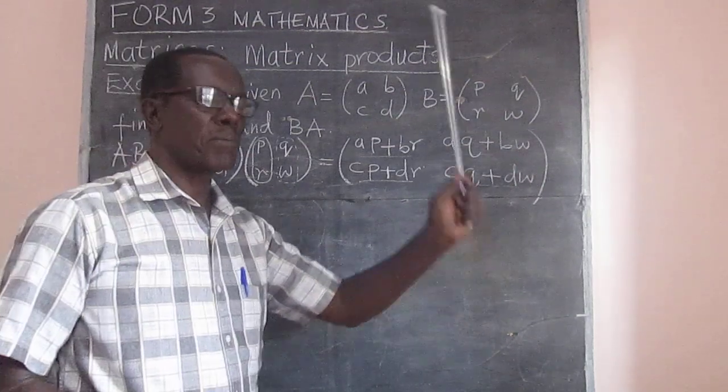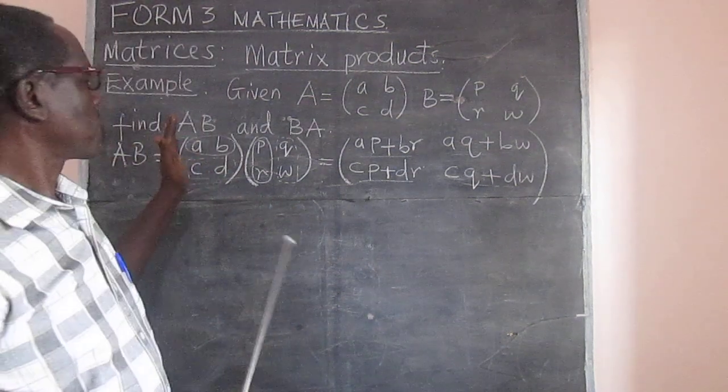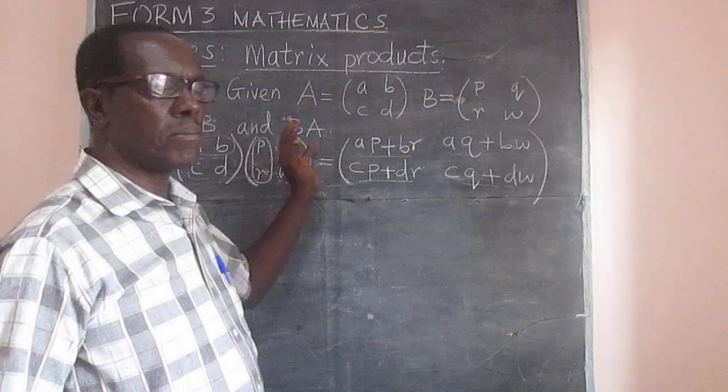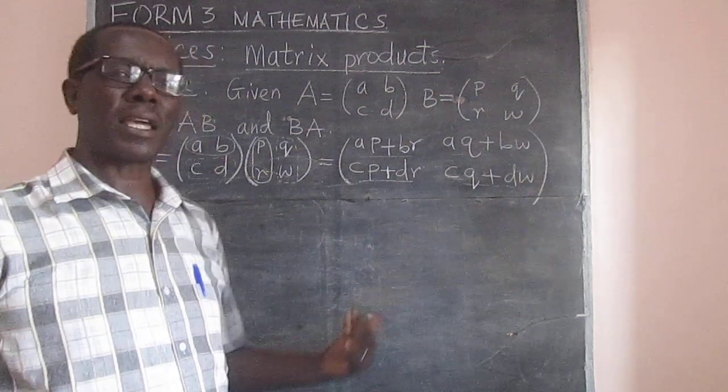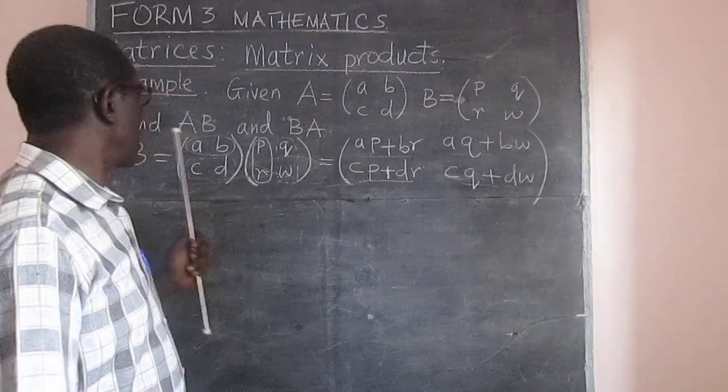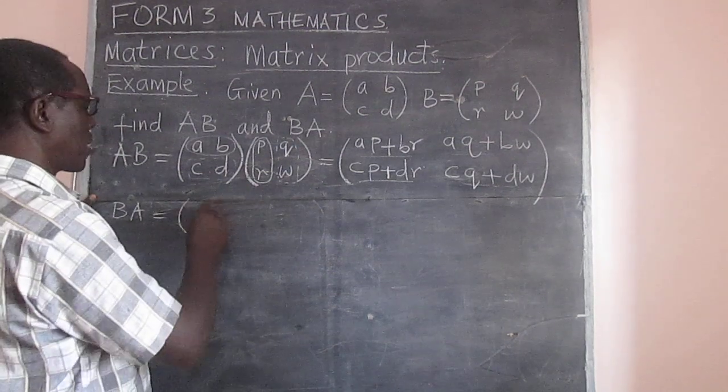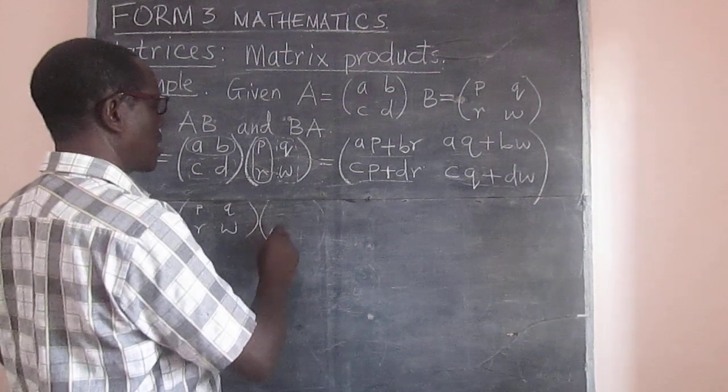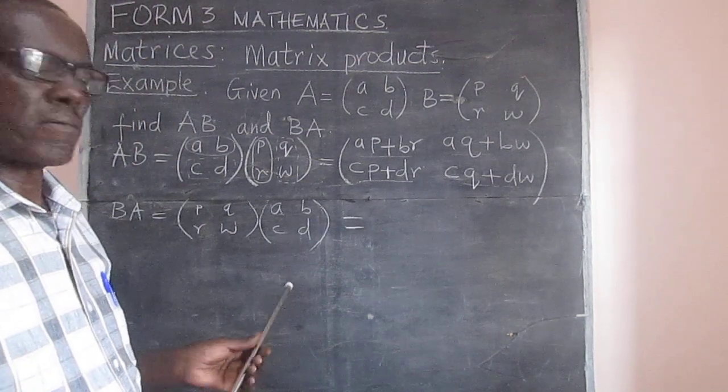And that becomes our product. We said we would like to see whether when we multiply matrices, that's A times B, whether we get the same product when we multiply B times A. When we pre-multiply A by B or pre-multiply B by A, what actually happens. So that's where we are now. We would like to get BA. And that would mean, this time now we start with P, Q, R and W, and then A, B, C, D. And now that we know how to multiply, we can get this very quickly.